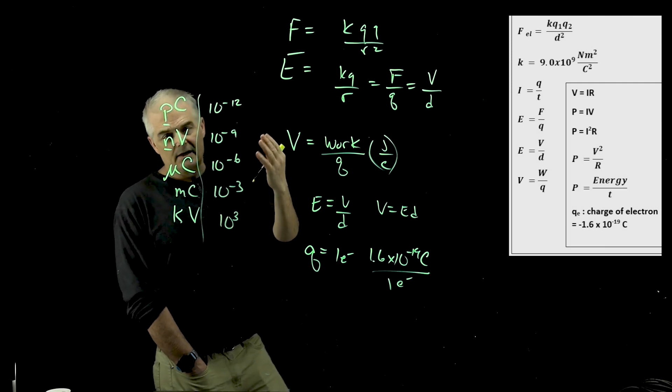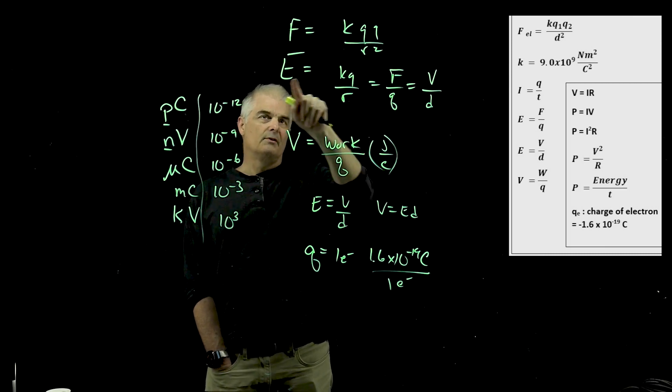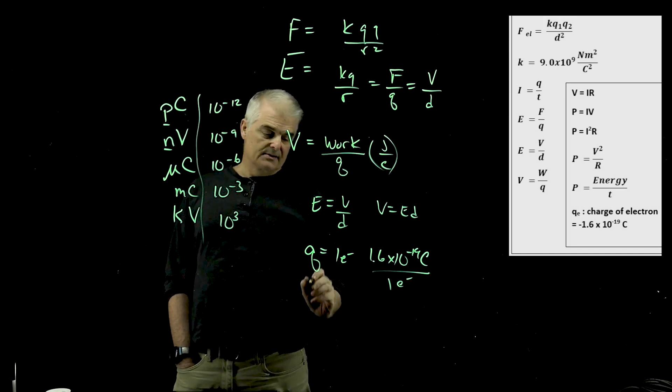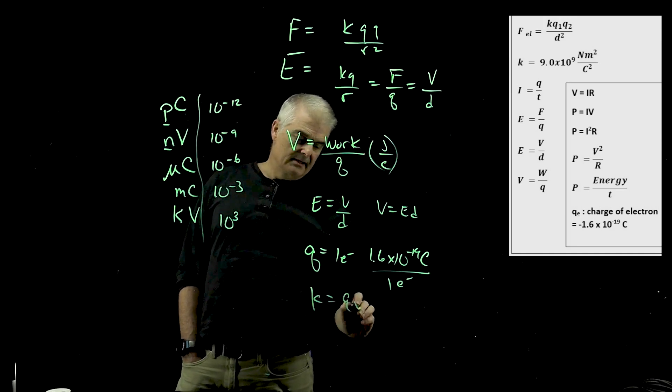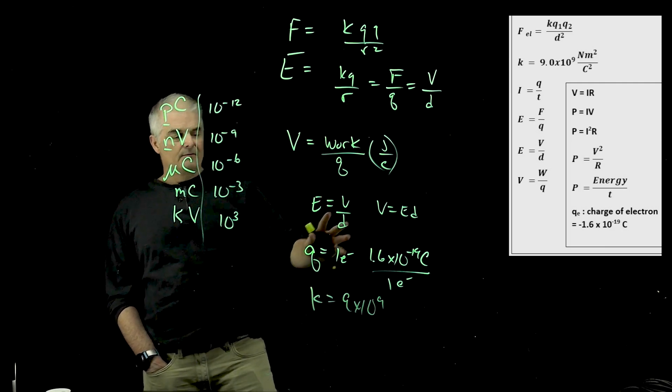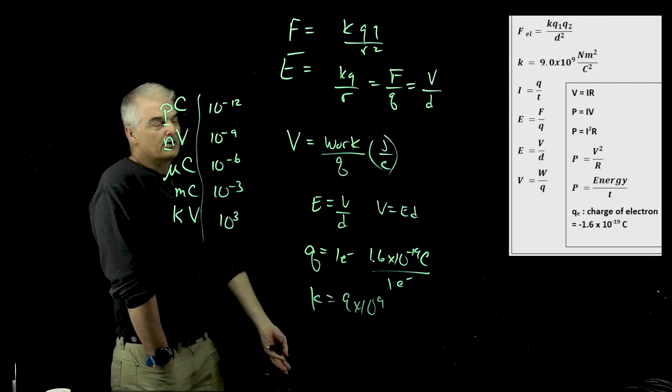And kilo is actually 10 to the 3rd. But you'll often see these prefixes when you're doing problems. So I might say, hey, given that you've got 220 nanocoulombs and you're solving for an electric field. Oh, and k. What's k? k is the constant, right? And k is 9 times 10 to the 9th. So you've got these different variables, and you're plugging them into a calculator and solving the problem. It all comes down to it.